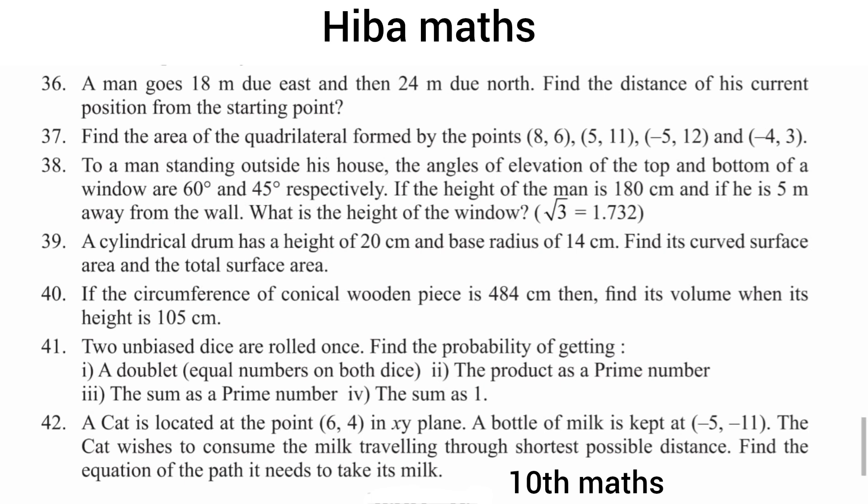A cylindrical drum of height 20 cm and base radius 14 cm. Find the curved surface area (CSA) and the total surface area (TSA). It is very easy.